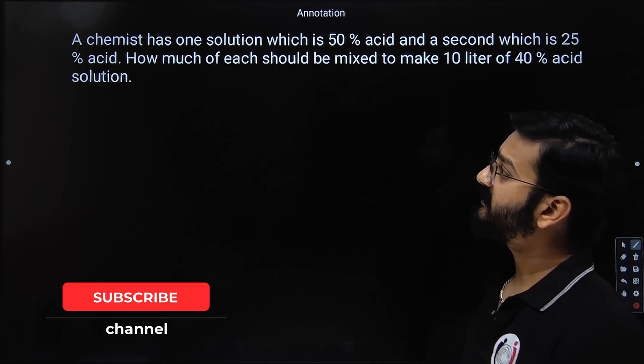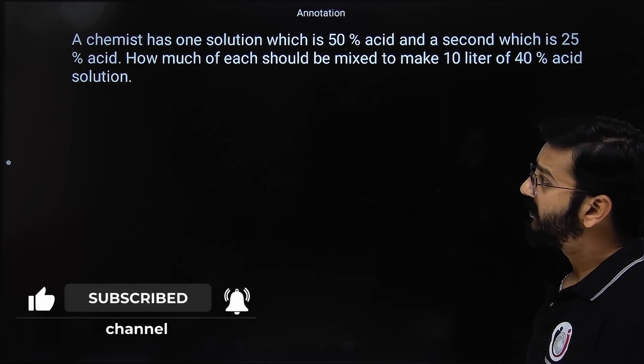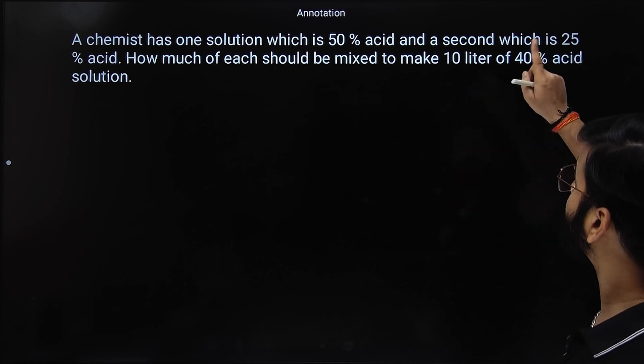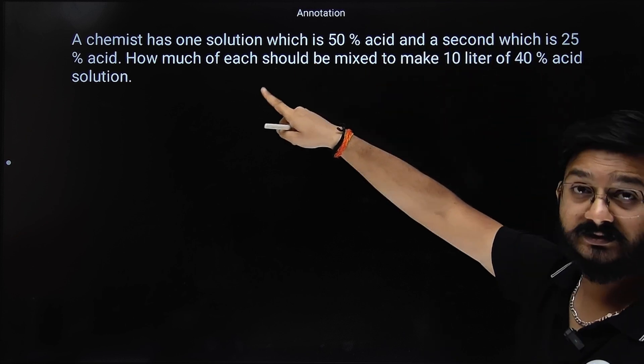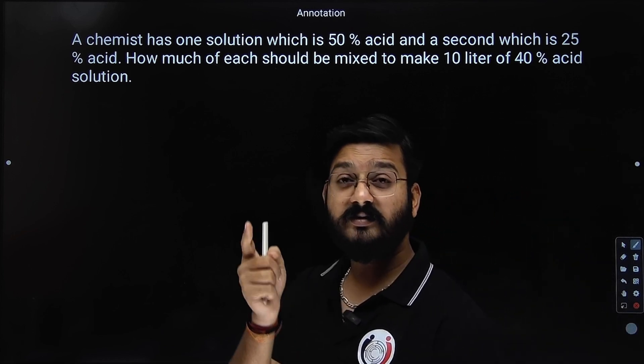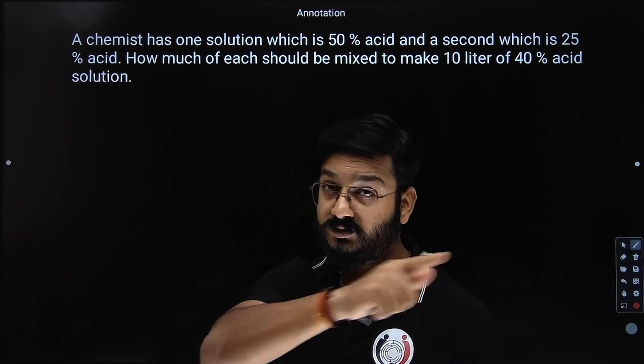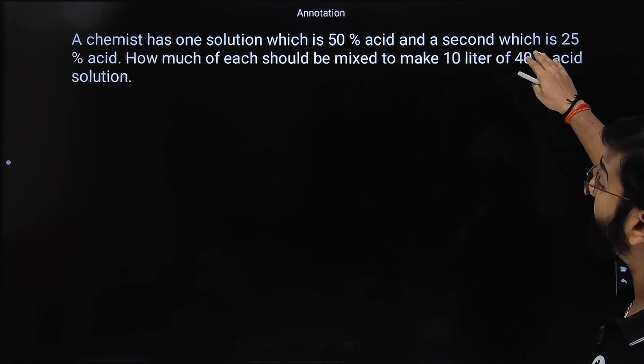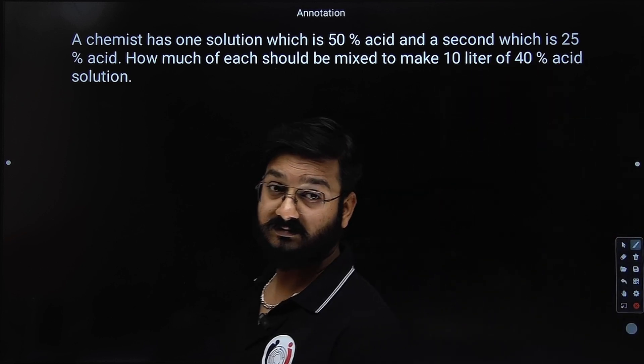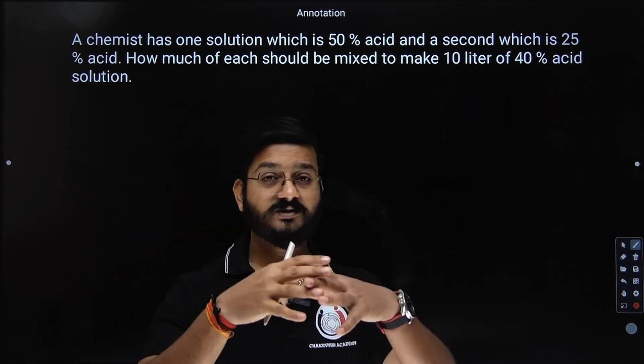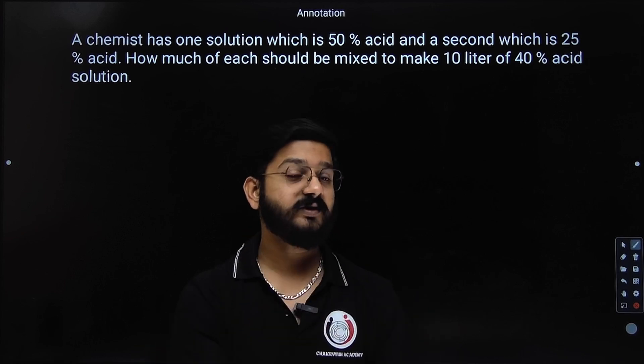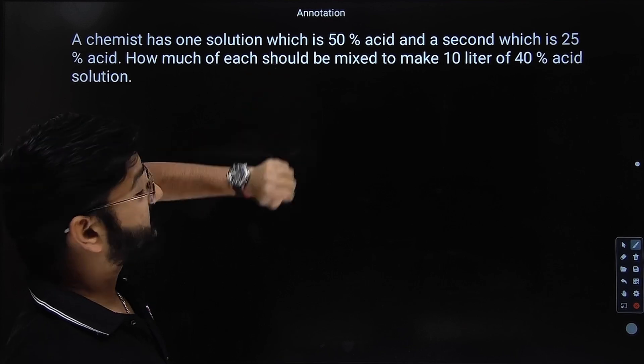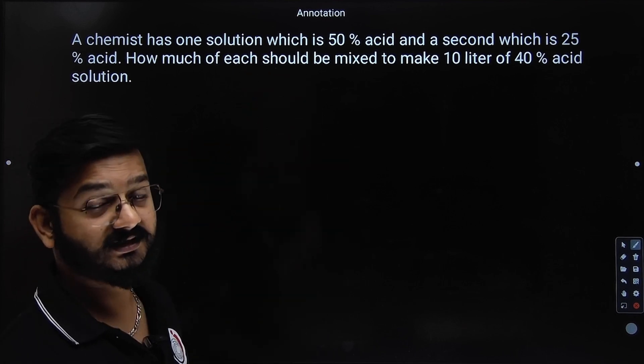Now students, read the second problem. A chemist has one solution which is 50% acid and a second which is 25% acid. How much of each should be mixed to form a new solution of 10 liters of 40% concentration? So two types of solutions are mixed to form a new solution. We need to find out what is the amount of each acid solution mixed.